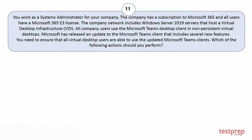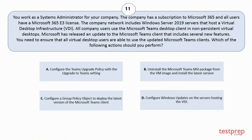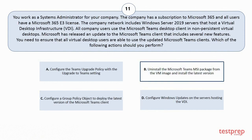Question 11. You work as a systems administrator for your company. The company has a subscription to Microsoft 365, and all users have a Microsoft 365 v3 license. The company network includes Windows Server 2019 servers that host a virtual desktop infrastructure (VDI). All company users use the Microsoft Teams desktop client in non-persistent virtual desktops. Microsoft has released an update to the Microsoft Teams client that includes several new features. You need to ensure that all virtual desktop users are able to use the updated Microsoft Teams clients. Which of the following actions should you perform? Your options are: A. Configure the Teams upgrade policy with the upgrade to Teams setting. B. Uninstall the Microsoft Teams MSI package from the VM image and install the latest version. C. Configure a group policy object to deploy the latest version of the Microsoft Teams client. D. Configure Windows updates on the servers hosting the VDI. The correct answer is Option B.